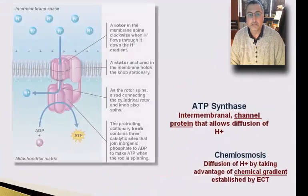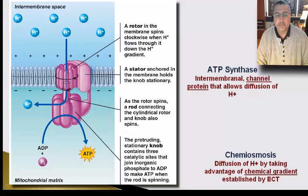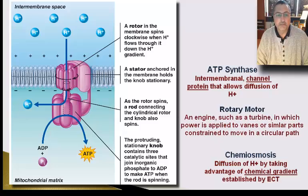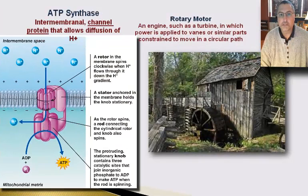ATP synthase is a large protein complex. Take a look at it — components of it are embedded in the phospholipid itself, and in the middle you can see a hydrogen ion channel that is created. ATP synthase has specialized channel proteins embedded within it that permit the movement of hydrogen ions via osmosis. This protein complex is actually the smallest rotary motor known to exist.